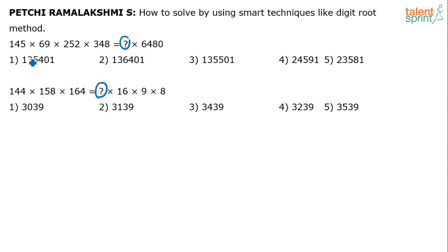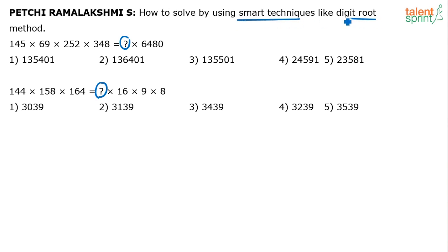The question mark will be equal to the product of all these values divided by 6480. For the second question, it's the product divided by 16 into 9 into 8. But then, how do we solve it using a smart technique like the digit root method? The digit root method is nothing but the digital root method — that is what is being referred to.